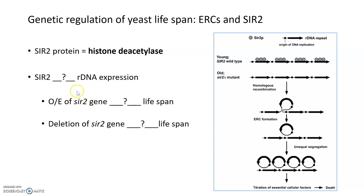If you have overexpression of SIR2, you can extend lifespan by keeping rDNA expression suppressed for a longer period of time. So overexpression of SIR2 increases lifespan by decreasing ERC formation. Conversely, if you delete SIR2 — indicated here by the delta symbol after SIR2 — you promote ERC formation and therefore decrease lifespan.